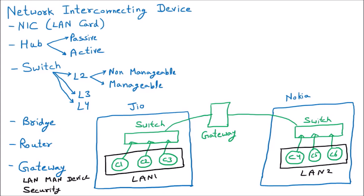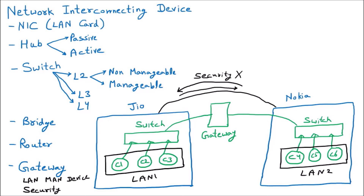Every company has their own gateways. Now if we connect these two buildings directly with the help of one wire, there is no restriction — anybody can send the data from LAN2 to LAN1 and from LAN1 to LAN2, meaning there is no security. If there is no security, everybody can see the projects of everybody else, and that is not acceptable. That is why we have the device called gateway.